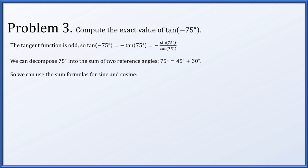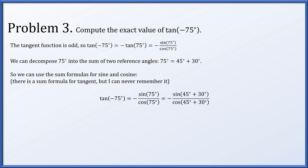So we can use the sum formula for sine and cosine. There is a sum formula for the tangent function, but I never remember it and have to look it up, so instead of using the tangent formula, we're just going to do sine and cosine separately. The tangent of negative 75 degrees we've already expressed as negative sine of 75 degrees over cosine of 75 degrees.